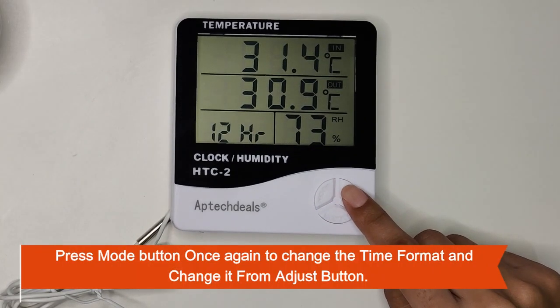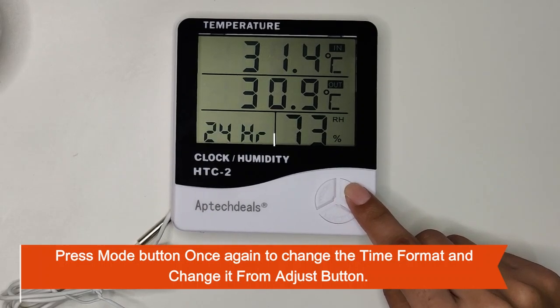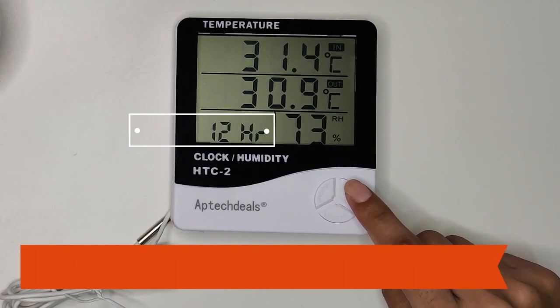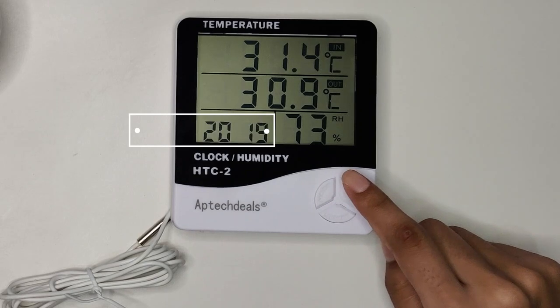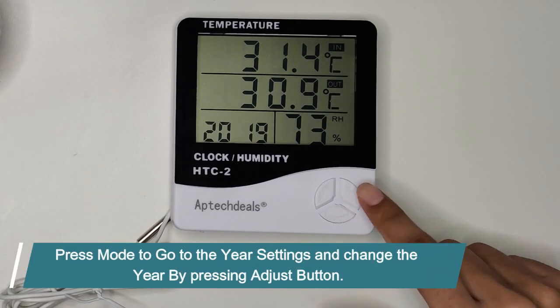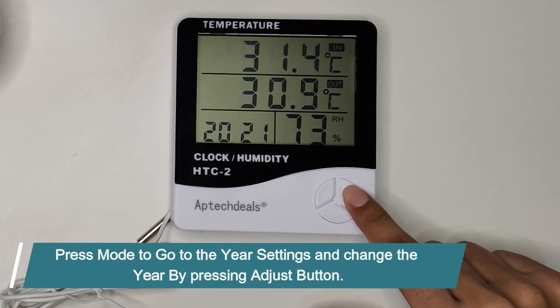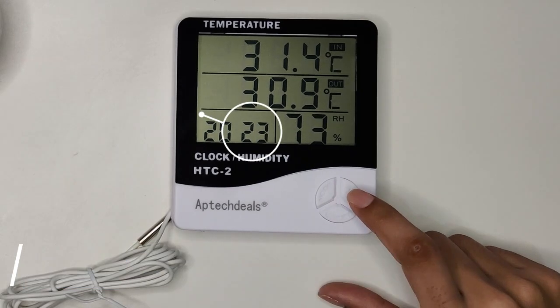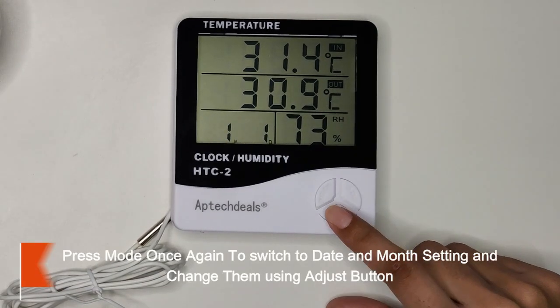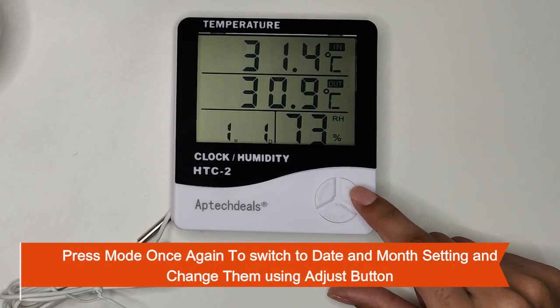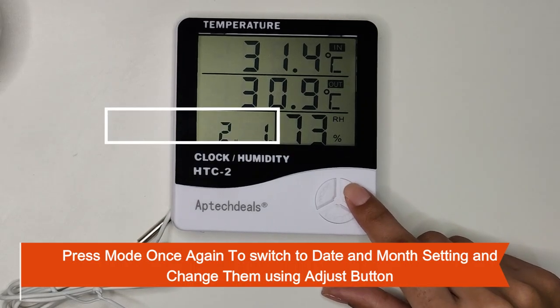Press the mode button once again to change the time format, and change it from the adjust button. Press mode to go to the year settings and change the year by pressing adjust button. Press mode once again to switch to date and month setting, and change them using the adjust button.